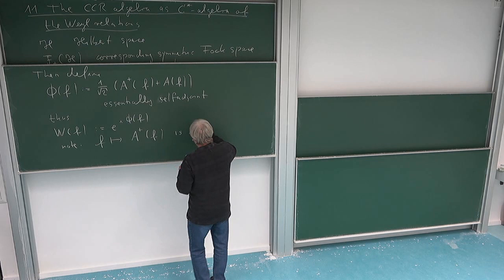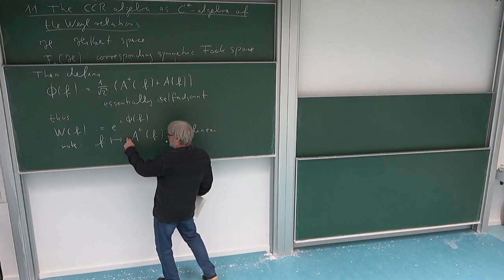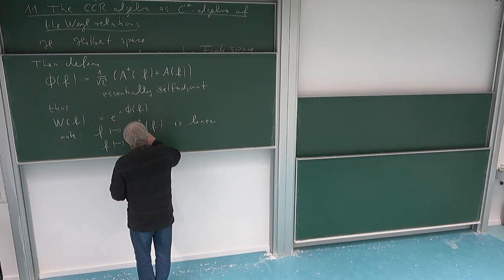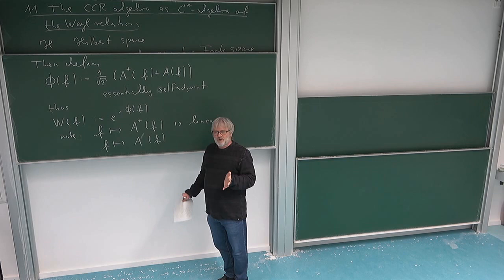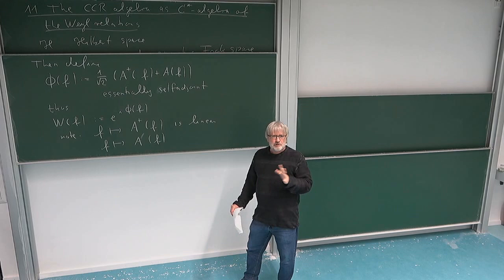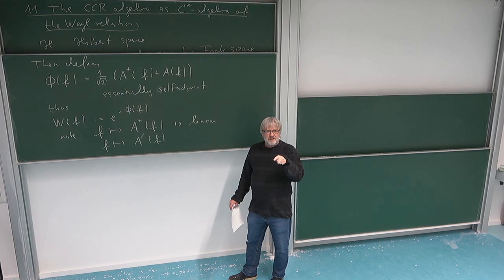To see that nothing is missing: the creation operator A⁺ is linear in its argument — if we multiply f by a complex number, that complex number comes out. The annihilation operator A(f) is anti-linear in its argument: A(λf) = λ̄ A(f). This is because A acts by taking the inner product of f with the state it acts on, and f is the first argument in the inner product, which is anti-linear.